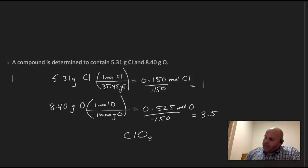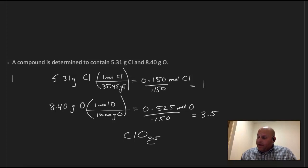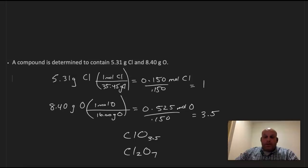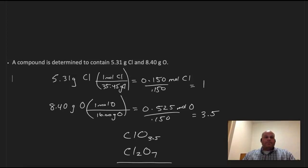You haven't come across anything like that thus far, and again, the empirical formula requires the simplest whole number ratio of atoms, so that clearly doesn't work. But if I were to double both values — the 1 and the 3.5 — I would get an empirical formula of Cl2O7. The Cl2O7 gives me that simplest whole number ratio of atoms and ultimately my empirical formula. There is no ratio for chlorine and oxygen in which I have only one chlorine atom; the simplest would be 2 chlorines and 7 oxygens.